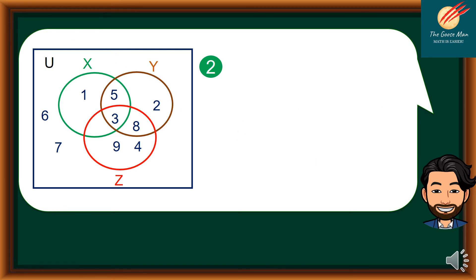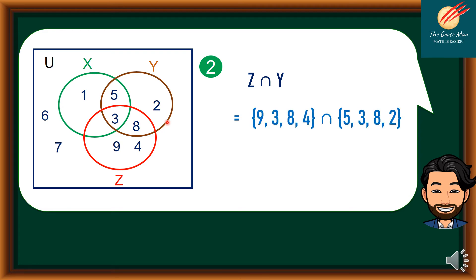Now let's find Z intersection Y. The elements of Z are {9, 3, 8, 4}, while Y is composed of {5, 3, 8, 2}. Looking for the common elements, we have only 3 and 8.